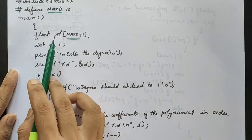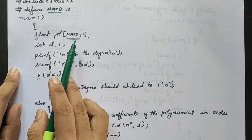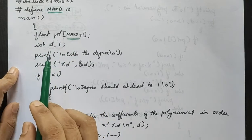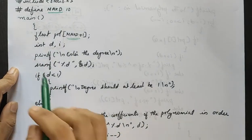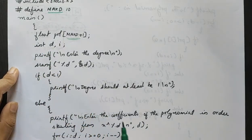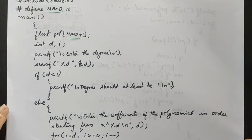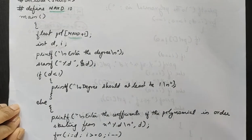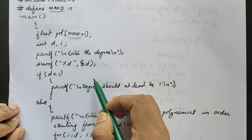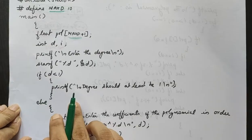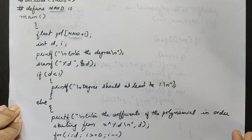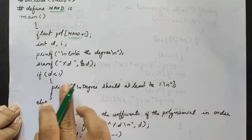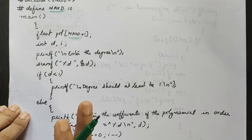The polynomial array has size MaxD plus 1, and its data type is floating point, representing the coefficients as real numbers. There are two variables: d for storing the degree of the polynomial, and i as the loop index. The degree must be a non-negative integer — that is, 0 or a positive integer.